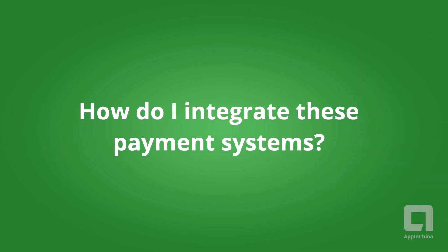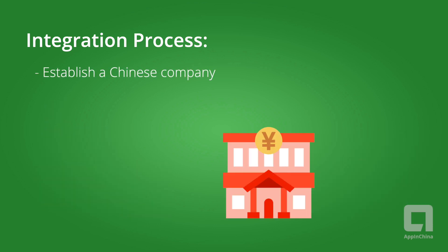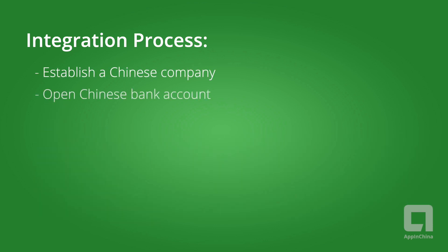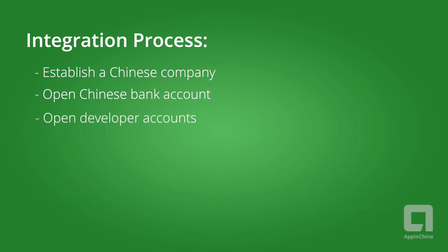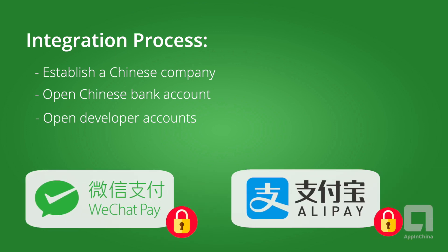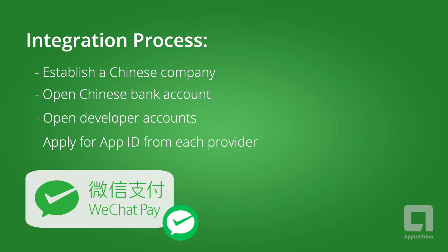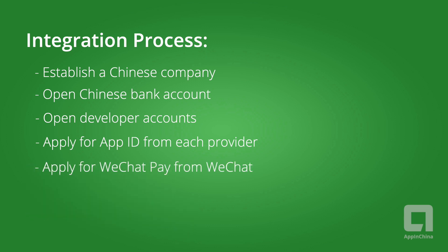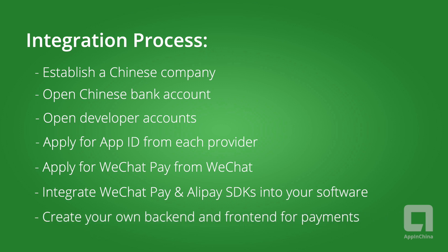How do you integrate this into your app? First, you need to have a Chinese company. Your company must then open a bank account with a Chinese bank and then apply for a developer account with WeChat Pay and Alipay. After your developer's account is approved, you must apply for an app ID from WeChat Pay and Alipay. For WeChat, you must also apply separately for the WeChat Pay function. Once all this is set up, use the WeChat Pay and Alipay SDKs and your own back-end and front-end systems to integrate payments into your app.